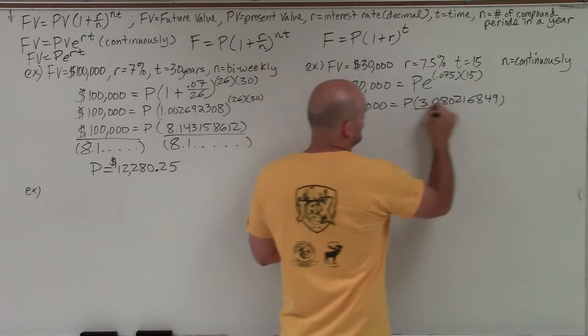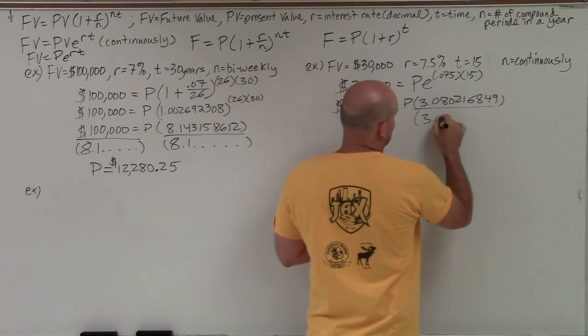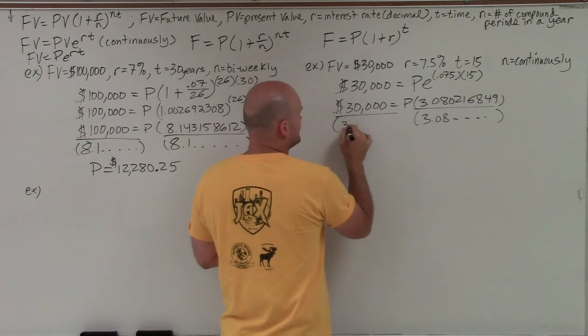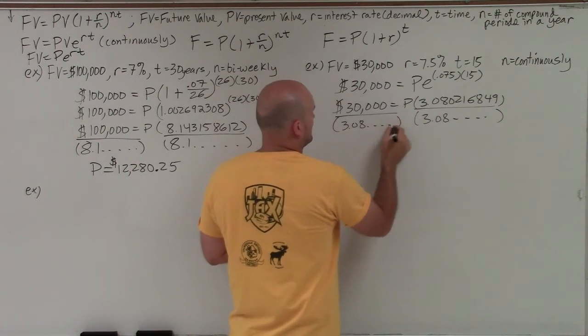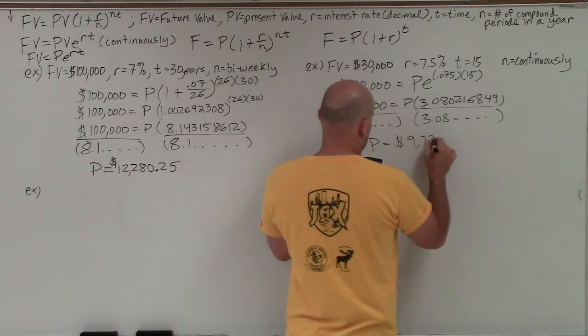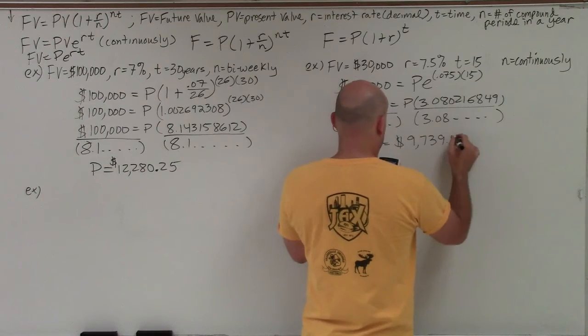So therefore, let's divide by 3.08 dot dot dot. That's basically what I'm doing to isolate the P. So P equals $9,739.57.